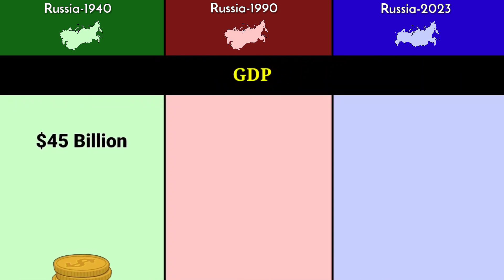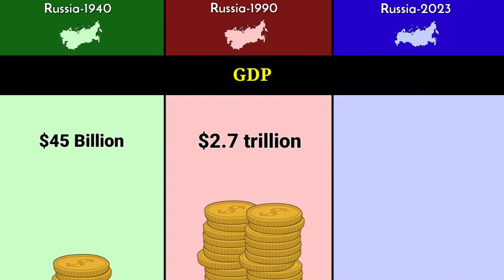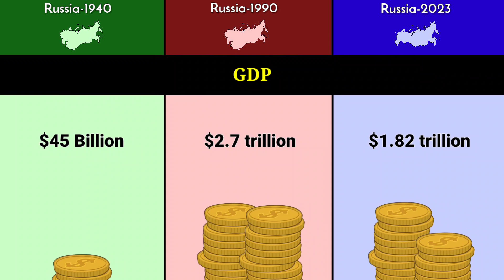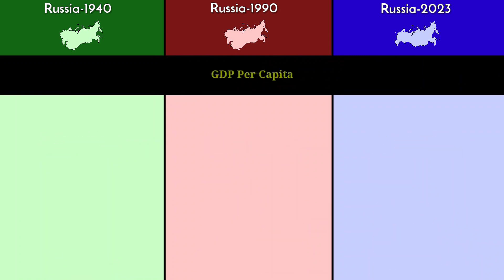GDP: 45 billion dollars in 1940, 2.7 trillion dollars in 1990, and 1.82 trillion dollars in 2023.